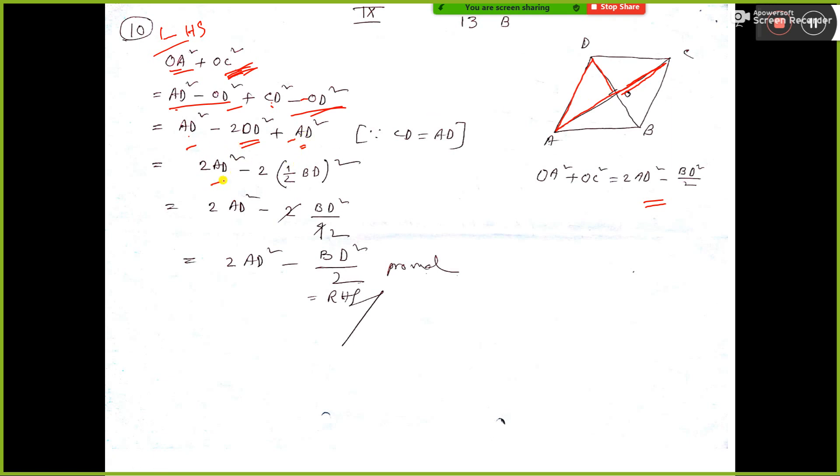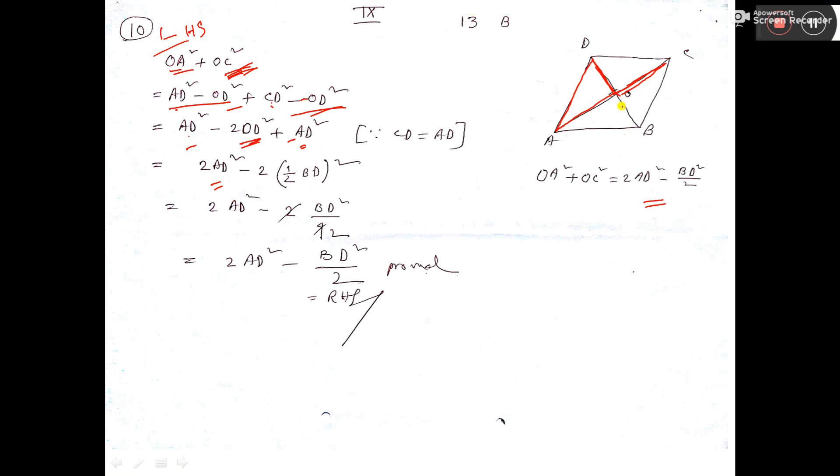AD plus AD, that is 2AD, and OD equal to what? You see, OD is equal to half BD because diagonals of rhombus bisect each other. So OD is equal to OB. So OD is equal to half of BD.